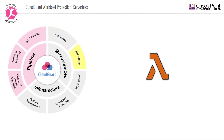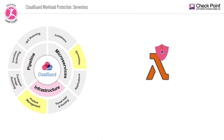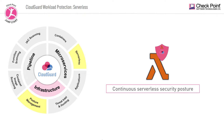CloudGuard's breakthrough code-centric platform automates security and visibility for cloud-native serverless applications from development to runtime, enabling organizations to securely innovate at cloud speed. By analyzing the serverless application code before and after deployment, organizations can achieve a continuous serverless security posture.